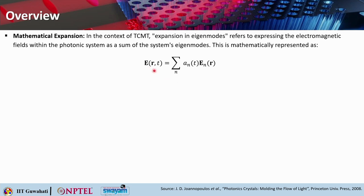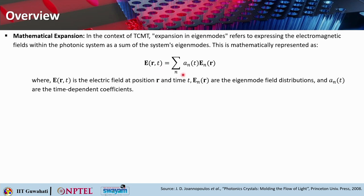Mathematically, you can write E(R,T) — the electric field as a function of both position and time — as a summation of A_N(T) times E_N(T), where E_N(T) are the eigenmode field distributions and A_N(T) are the time-dependent coefficients. This is how you express the electric field at any position R and T as an expansion of the system eigenmodes.